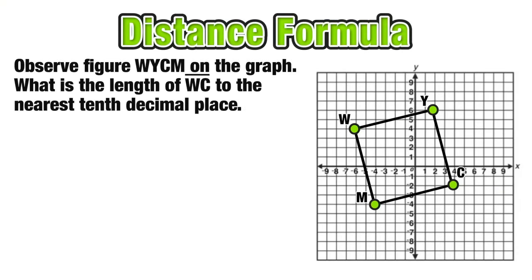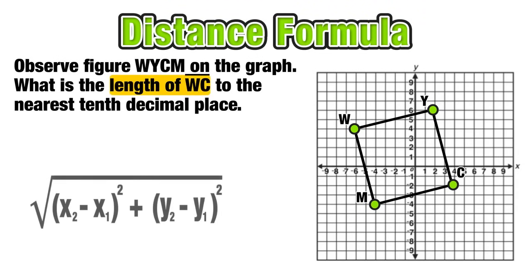For our next example, we're going to be observing a quadrilateral on the coordinate plane with endpoints W, Y, C, and M. We want to find the length of line segment WC. So we know we're going to have to use the distance formula again. Notice that W and C are diagonal from each other, so this is a diagonal of this four-sided figure. So we have to construct that line to help us visualize what line segment WC looks like on the coordinate plane.